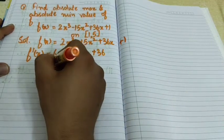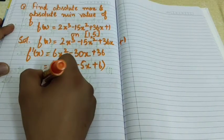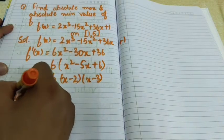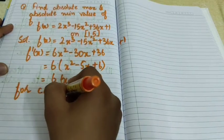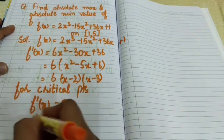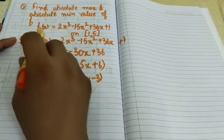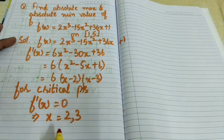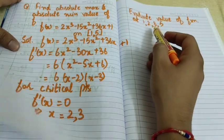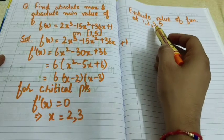The derivative simplifies to 6(x² - 5x + 6) = 6(x - 2)(x - 3). For critical points we put the derivative equal to 0, giving x = 2 and x = 3. Now we will evaluate the value of the function at the end points 1 and 5, as well as at the critical points 2 and 3.